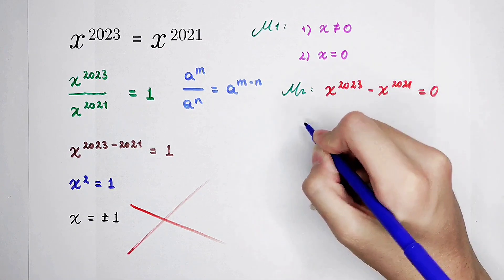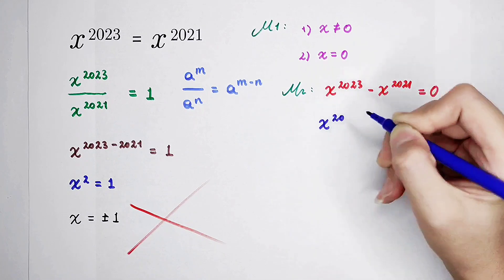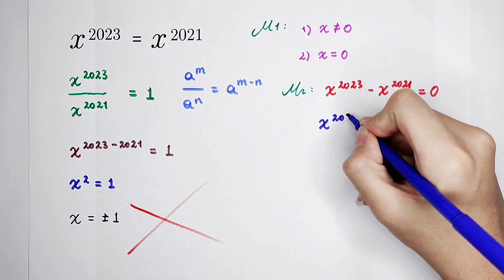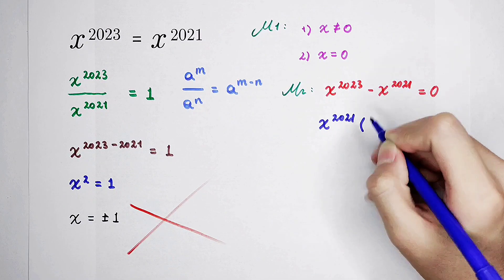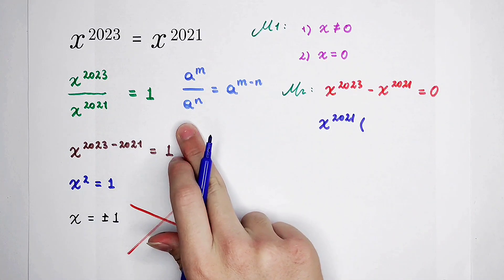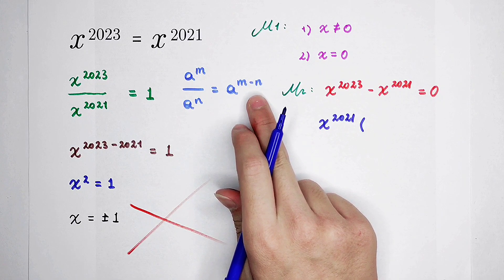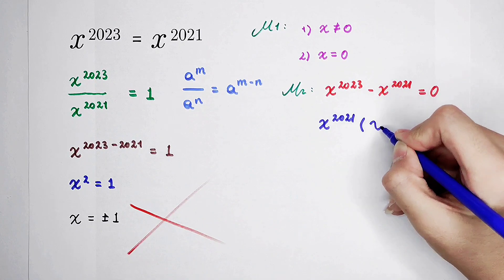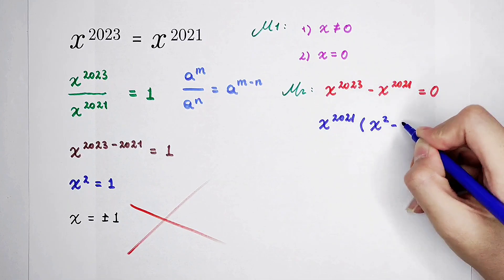We should take out an x to the power of 2021 and then times x to the power of 2023 divided by x to the power of 2021, which is x to the power of 2023 minus 2021. It is x squared. And this divided by itself is just 1.